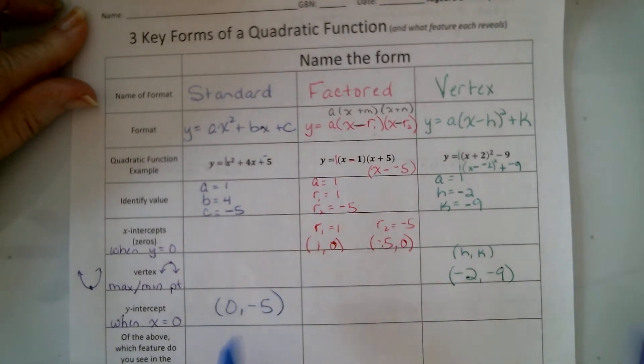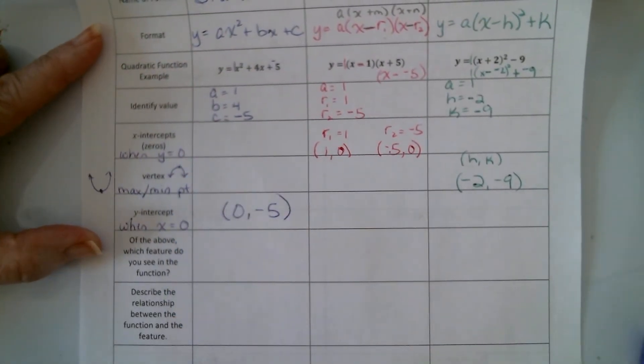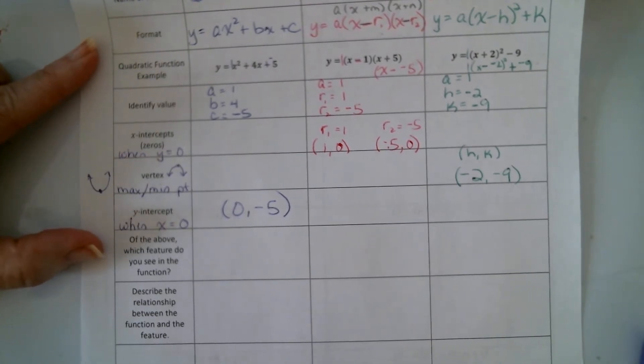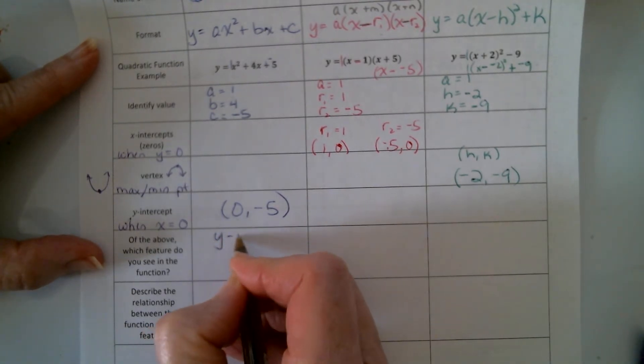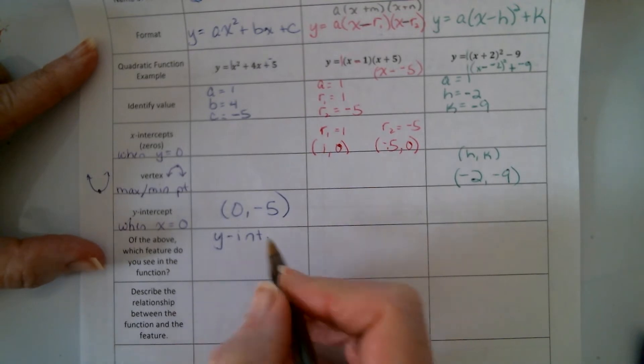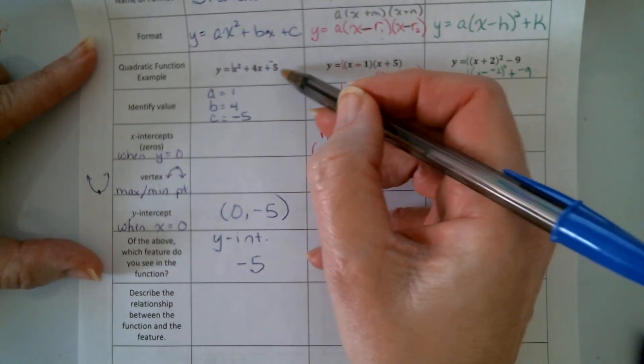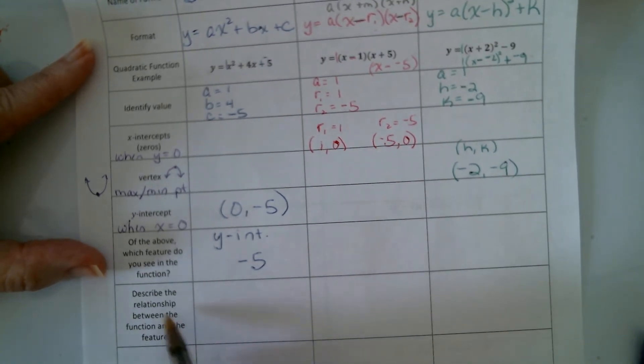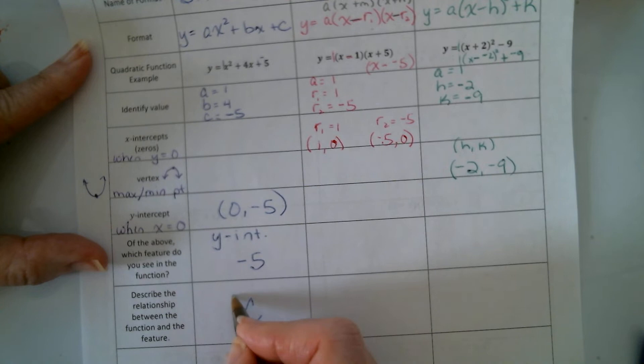So we're going to skip this part for now and then if we look at this next section that says of the above these three kind of features, right, which feature do you see in this function? It was the y-intercept, right, and in our case that was the negative five part, or up here. And so, well, what's the relationship between this feature and that format is it's the c-value, right, which is 0c.